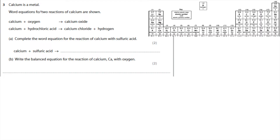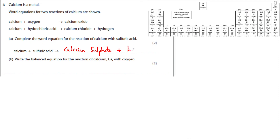Calcium is a metal. Word equations for two reactions of calcium are shown: calcium plus oxygen goes to calcium oxide, and calcium plus hydrochloric acid goes to calcium chloride plus hydrogen. To complete the word equation for the reaction of calcium with sulfuric acid: sulfuric acid is hydrogen sulfate, so we get calcium sulfate plus hydrogen. You need to know that metals plus acid go to salt plus hydrogen.